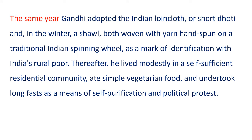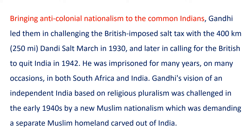The same year, Gandhi adopted the Indian loincloth, or short dhoti, and, in the winter, a shawl — both woven with yarn handspun on a traditional Indian spinning wheel — as a mark of identification with India's rural poor. Thereafter, he lived modestly in a self-sufficient residential community, ate simple vegetarian food, and undertook long fasts as a means of self-purification and political protest.